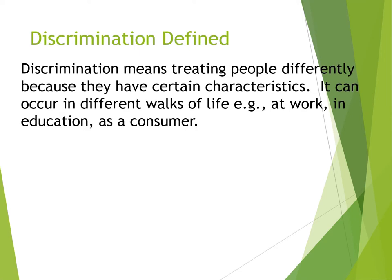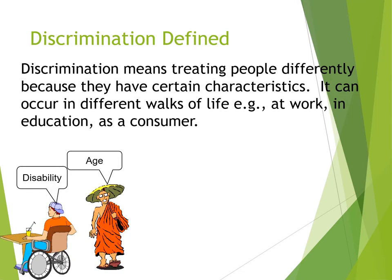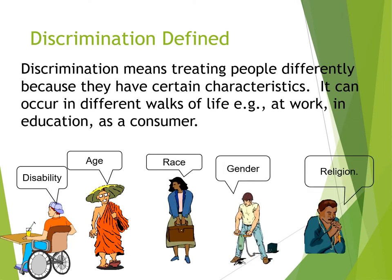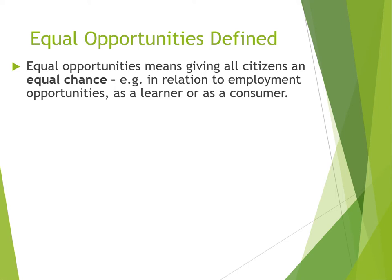Discrimination means treating people differently because they have certain characteristics. It can occur in different walks of life, for example at work, in education, or even as a consumer. Some of the protected characteristics include disability, age, race, gender, and religion.